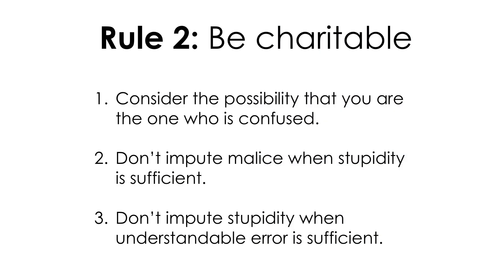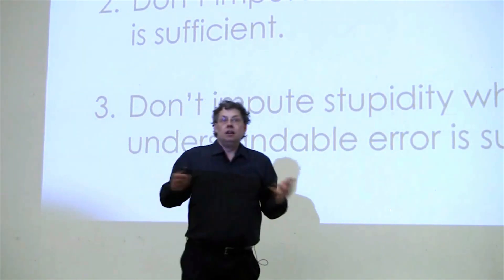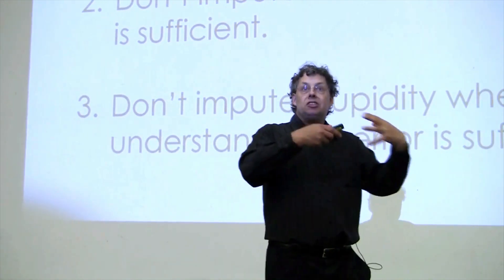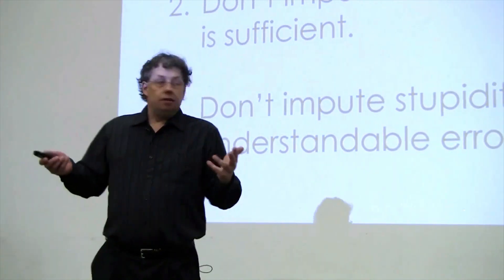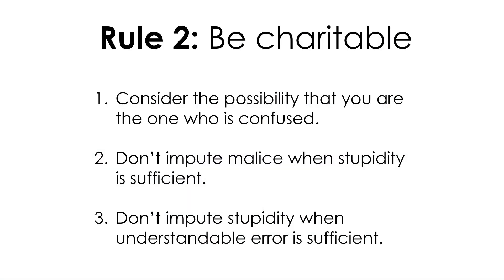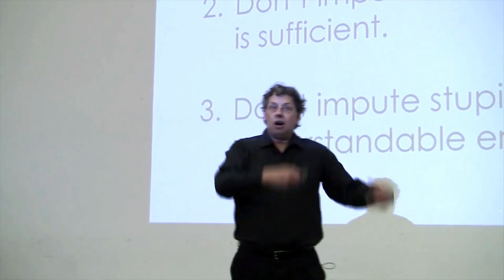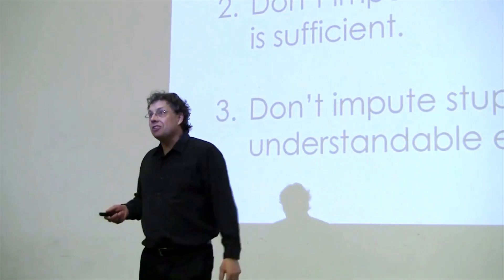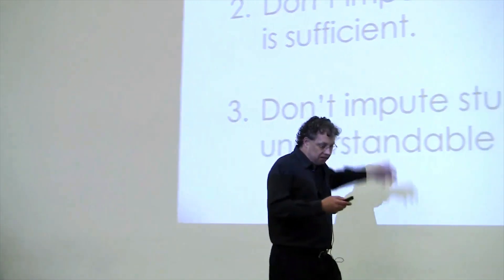In terms of being charitable, don't impute malice when stupidity is sufficient. There are a lot of things that corporations or news media do that you may say are malicious, that they're trying to trick you or force an agenda on you. A reasonable fraction of that is just a mistake—somebody's done or said something stupid. And as far as stupidity is concerned, once you've decided to abandon malice for stupidity, let's question the stupidity. Don't impute stupidity when a perfectly understandable error is sufficient. We all make mistakes. A lot of times when someone writes something that's wrong, they may not even be an idiot—they may be a perfectly intelligent person that's written something wrong. If you're attacking the claims and not the person, you're going to avoid many of these lapses.